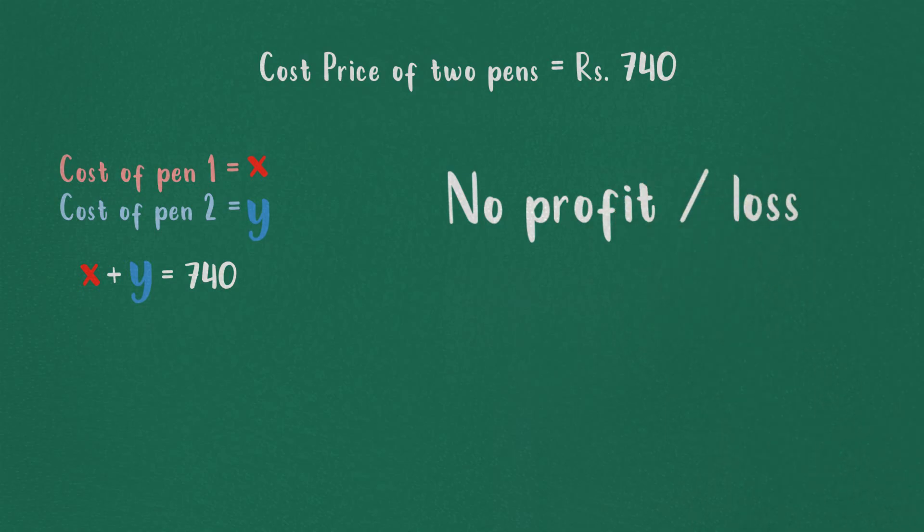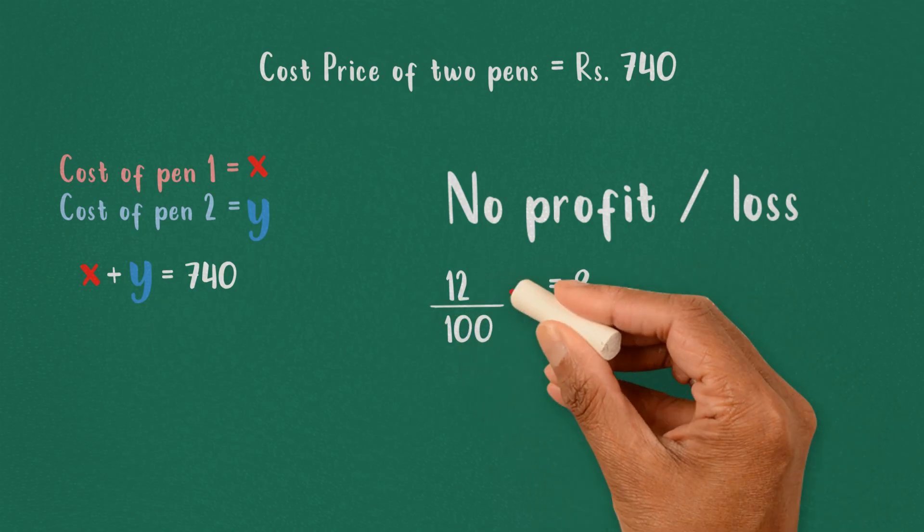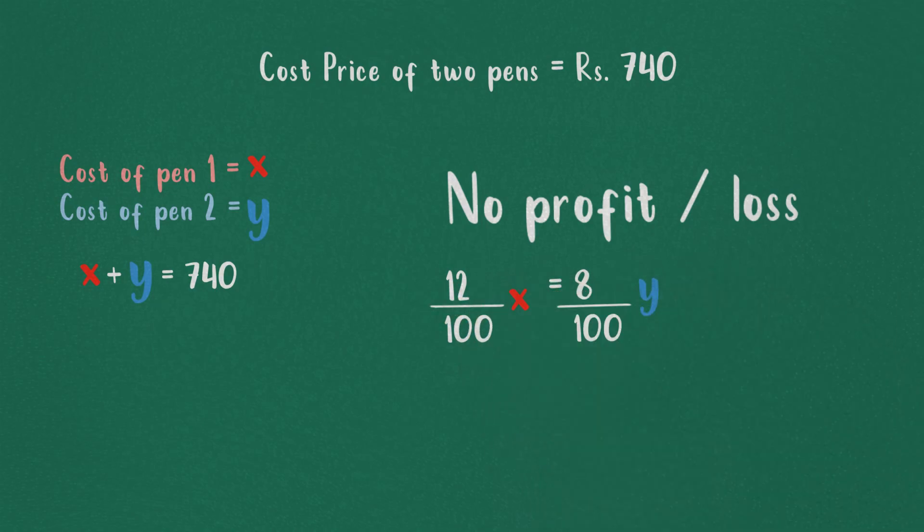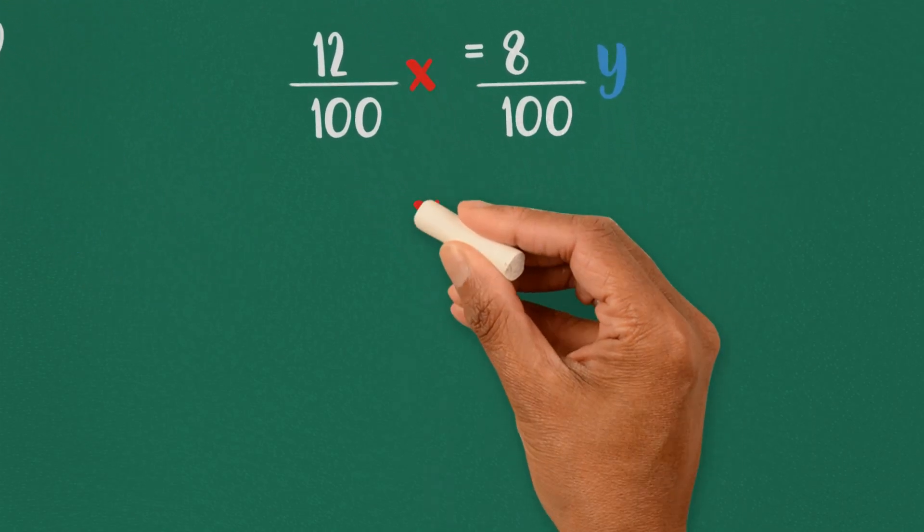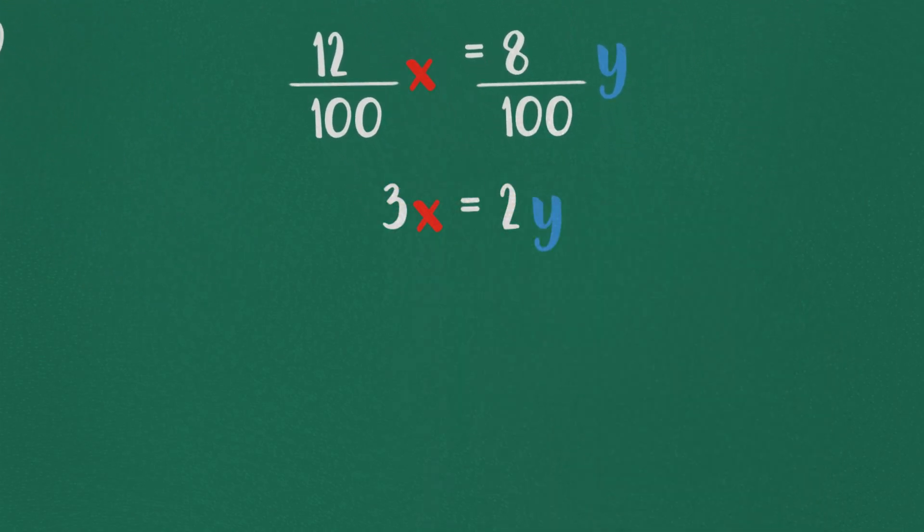12% of x will be equal to 8% of y. So we get 3x is equal to 2y.